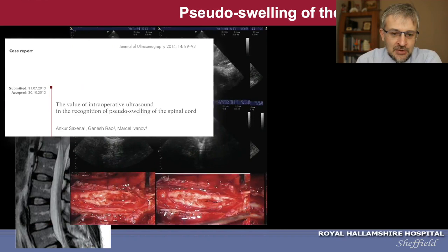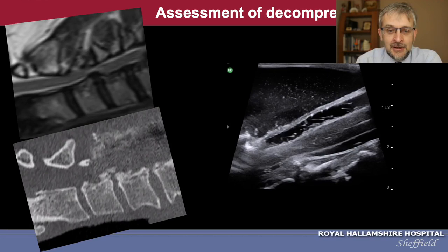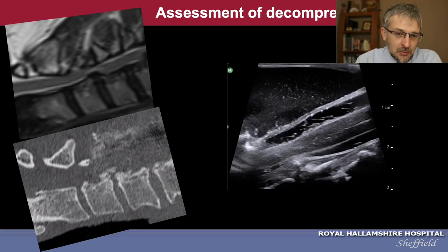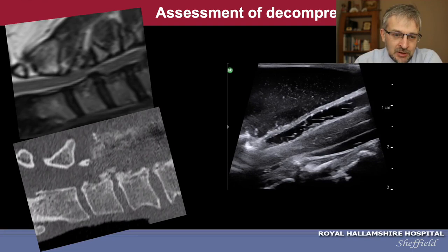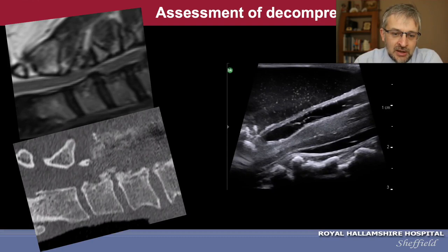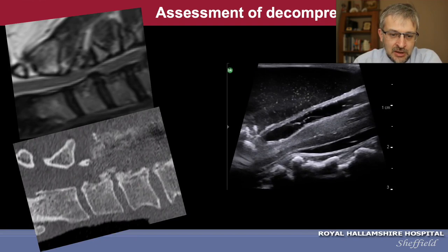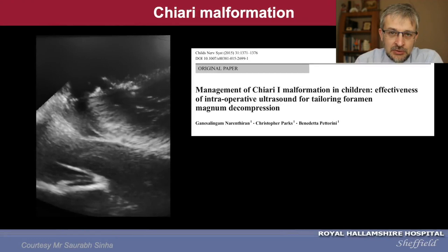There are several other indications — please explore further in papers we published in the Journal of Ultrasonography. One good routine indication is assessment of spinal decompression. This patient had severe spinal cord compression; initially we planned ACDF but CT showed calcification extending behind the vertebral body so we opted for a posterior approach. The concern was whether we achieved satisfactory decompression. After laminectomy, ultrasound confirmed the spinal cord was nicely decompressed and pulsating inside the dural sac without compression — very satisfying to see intraoperatively.